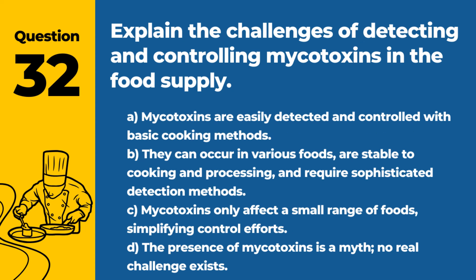Question 32. Explain the challenges of detecting and controlling mycotoxins in the food supply. a. Mycotoxins are easily detected and controlled with basic cooking methods. b. They can occur in various foods, are stable to cooking and processing, and require sophisticated detection methods. c. Mycotoxins only affect a small range of foods, simplifying control efforts. d. The presence of mycotoxins is a myth; no real challenge exists. Answer: b. They can occur in various foods, are stable to cooking and processing, and require sophisticated detection methods. Mycotoxin management is complex and critical for food safety.